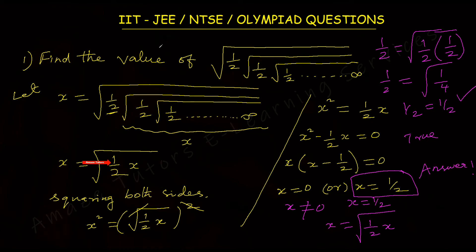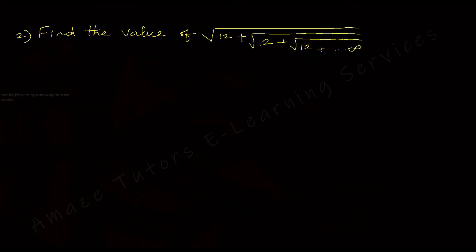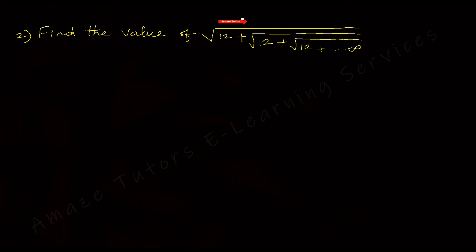I hope you understood. Let's do the second question. In the first question we had a product with 1/2 inside nested surds. Now this second question has a plus in the middle: find the value of square root of 12 plus square root of 12 plus square root of 12, and so on with nested surds until infinity.